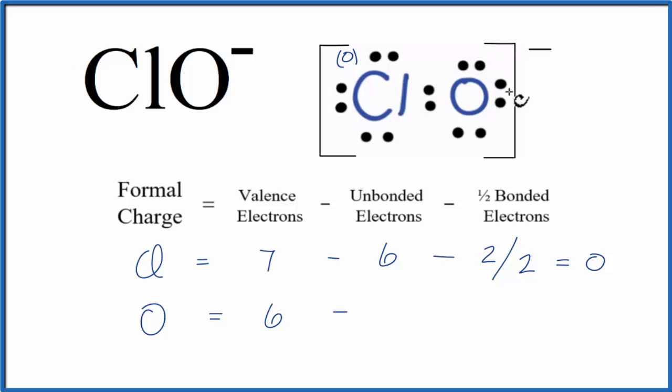Unbonded, we have 2, 4, 6 minus one half of the bonded valence electrons. We have two of those right here.